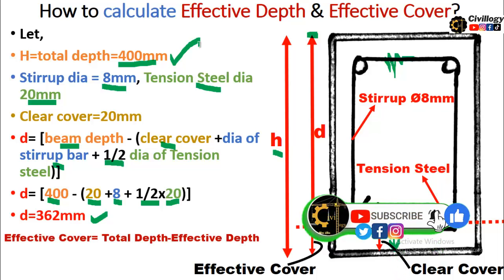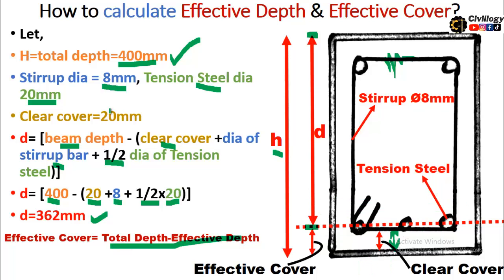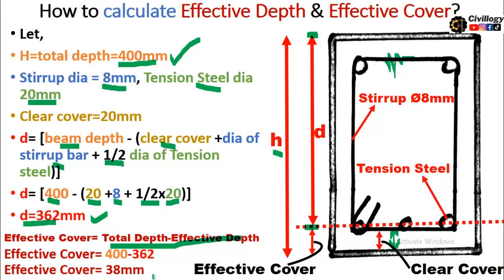The effective cover equals total depth minus effective depth: 400 − 362 = 38 mm. This means effective cover is always greater than clear cover. Effective cover is measured on the bottom and top sides of the beam or slab, whereas clear cover is provided on all four sides with the same value.